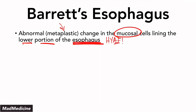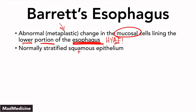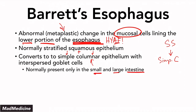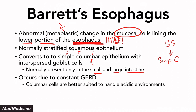Normally in the esophagus, the epithelial layer is stratified squamous epithelium. In Barrett's esophagus, that stratified squamous layer converts into simple columnar epithelium with interspersed goblet cells. This is not normal — simple columnar epithelium is present only in the large and small intestines. So you're getting intestinal findings in the esophagus where they should not be. This is usually caused by constant GERD: the acid coming up from the stomach erodes the normal stratified squamous epithelium, causing the esophagus to convert that layer to simple columnar. These columnar cells are better suited to handle the acidic environment.